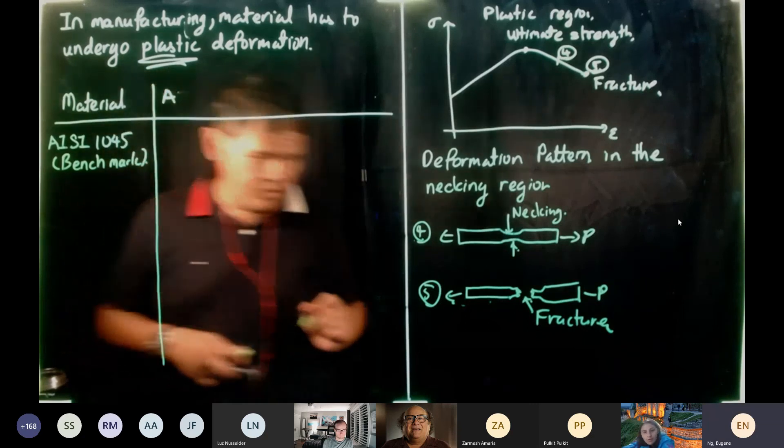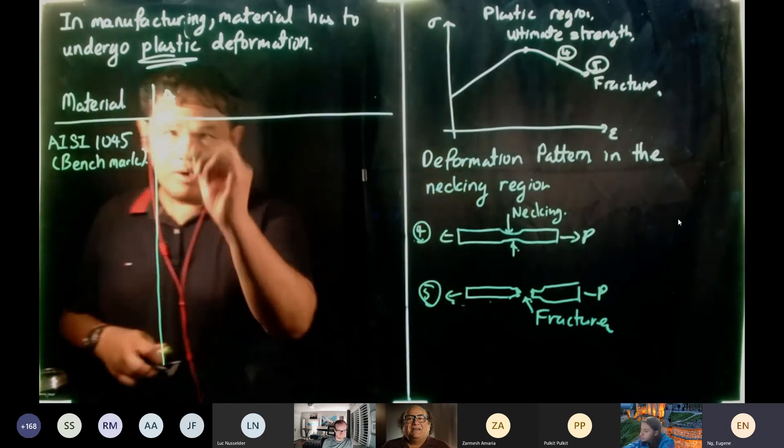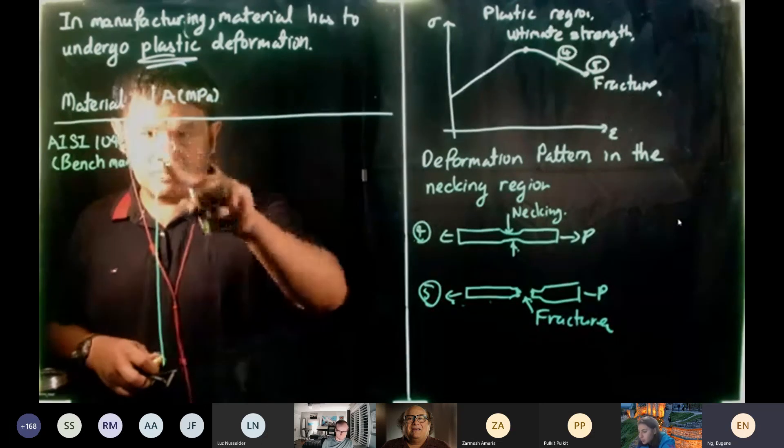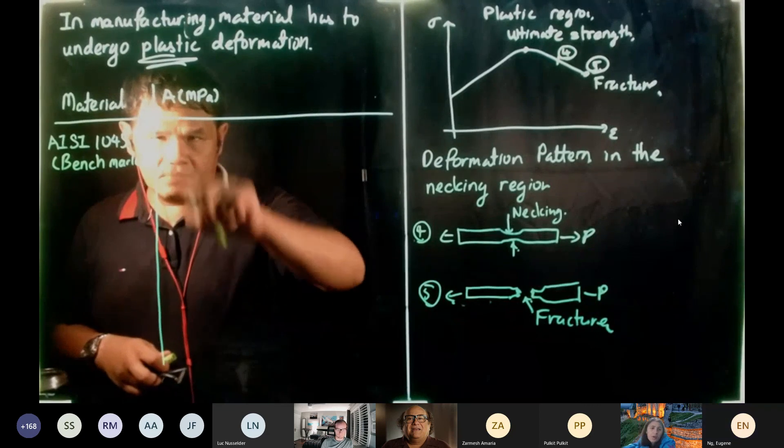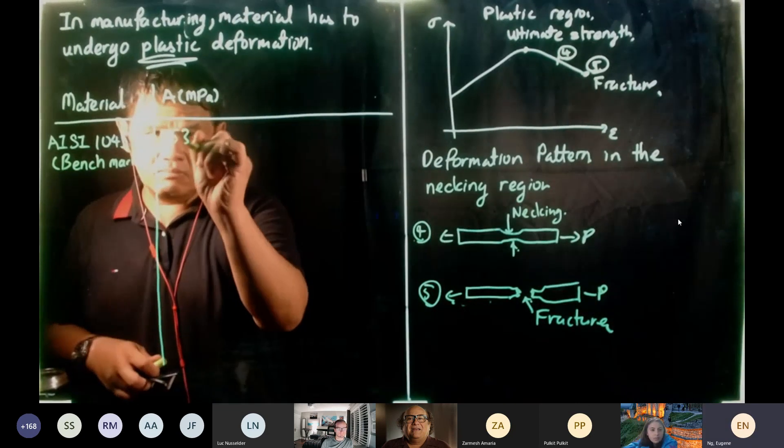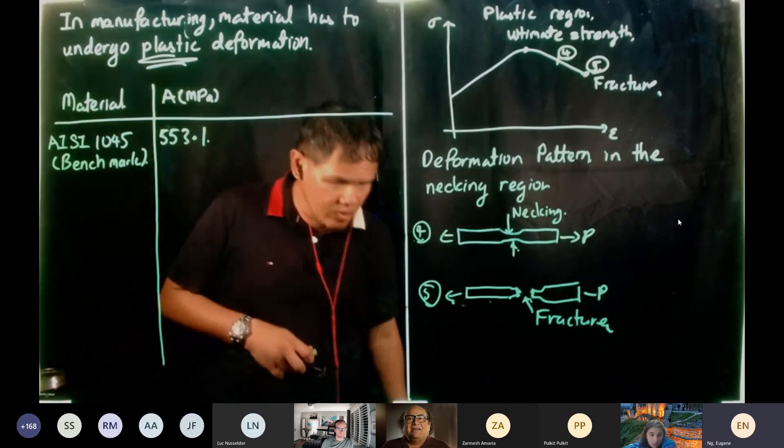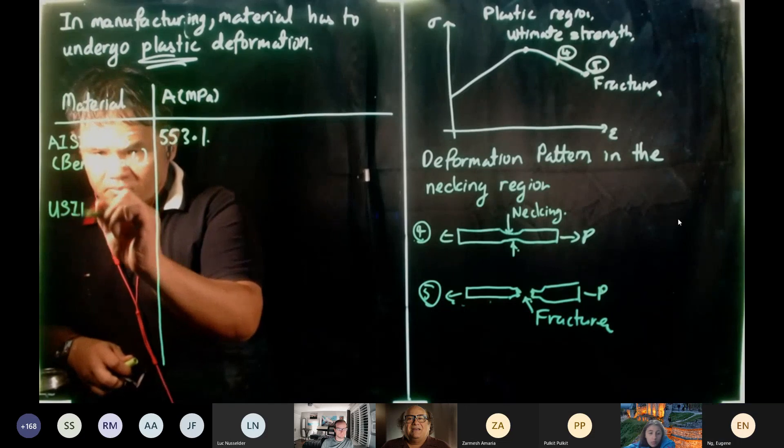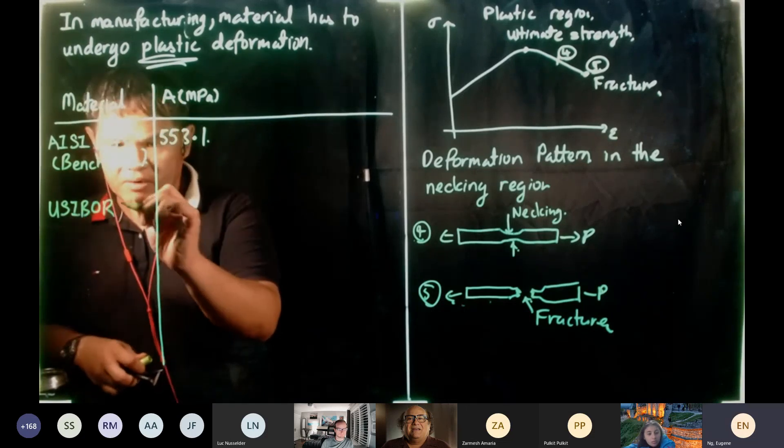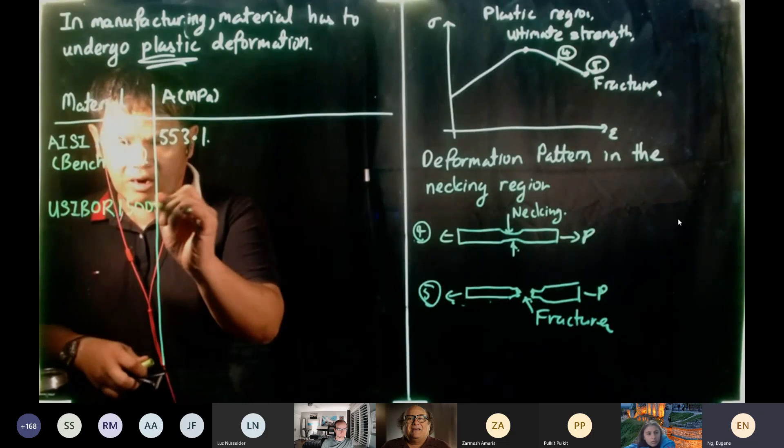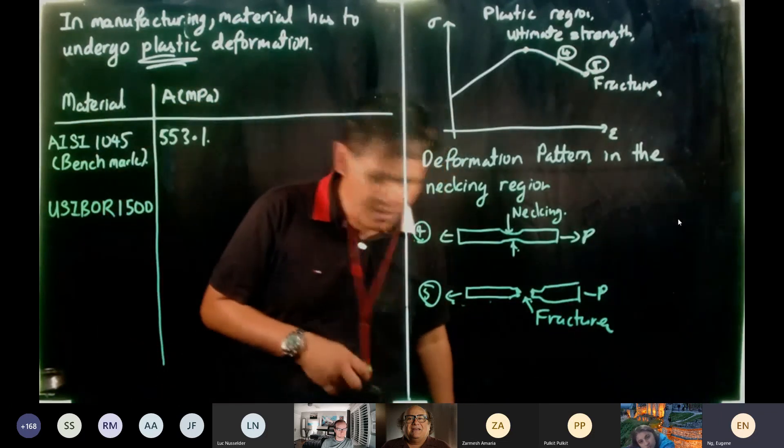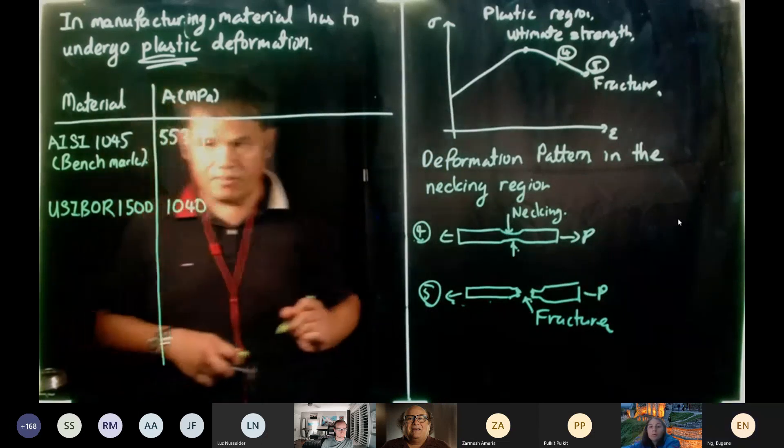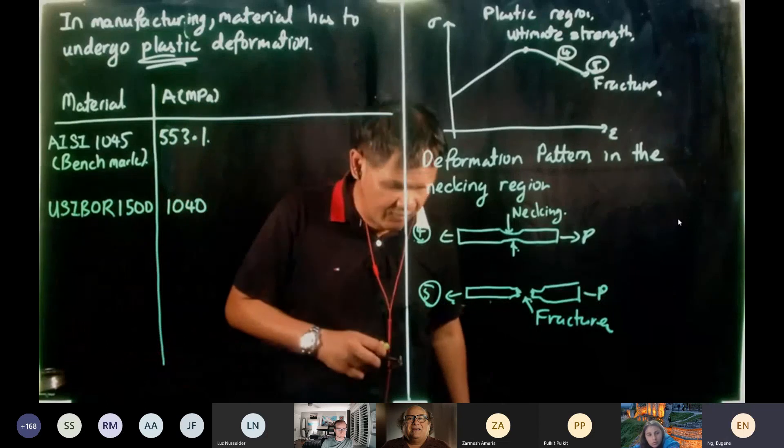I said excuse me, what is ISIS 1045? You know 2015, 2016, you know what happened in 2015, right? The Paris bombing. And when the students say ISIS 1045, my mind thought of a terrorist group. So sorry that humor. So don't call it ISIS. It's AISI 1045. So it's a piece of medium carbon steel. So this will be our benchmark, reference. So if we look at the A value, the A value is 553.1 megapascal.